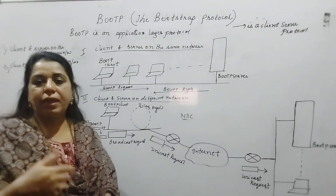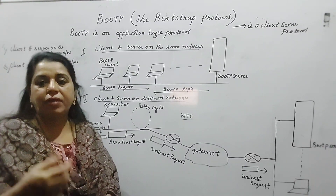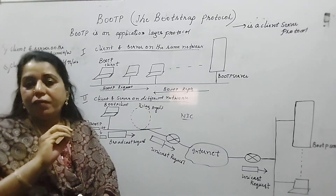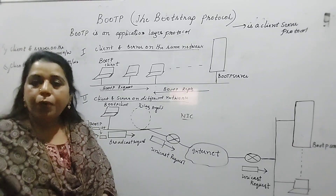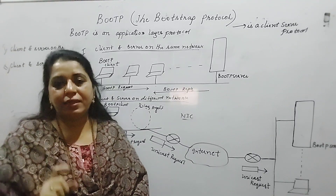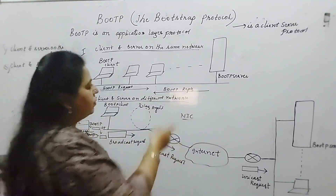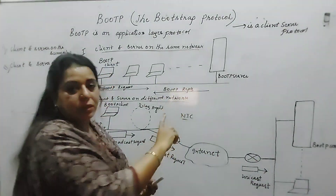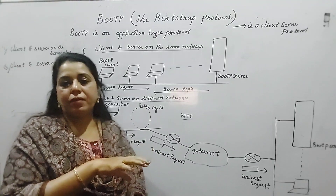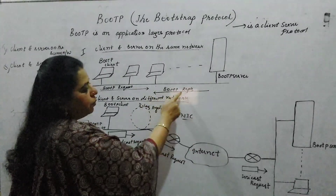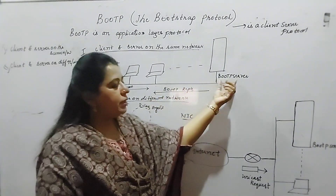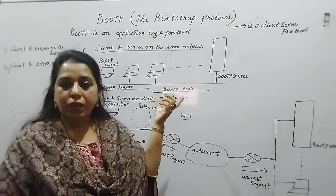Since the client is not knowing its own logical address, it will place all zeros in that source address field. It is also not knowing the logical address of the BOOTP server, so it will include all ones in the destination address, making it a broadcast address. It is received by all nodes in the network, but the BOOTP server recognizes and maintains this information. The BOOTP server replies with a BOOTP reply sent as a unicast, reaching directly only to the client.